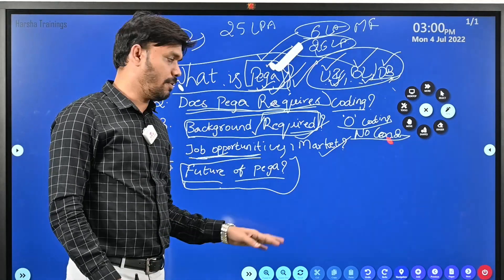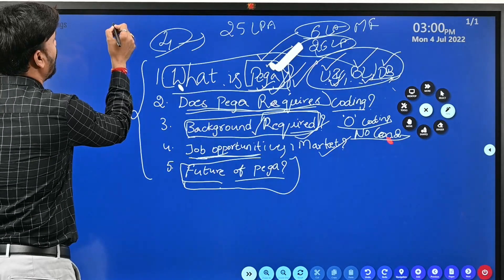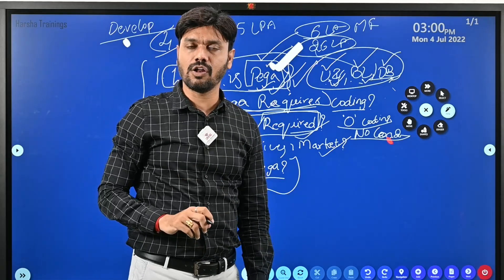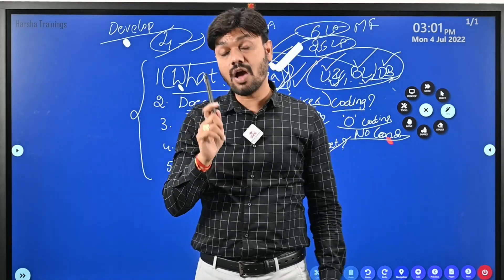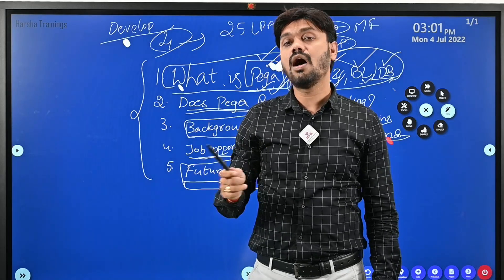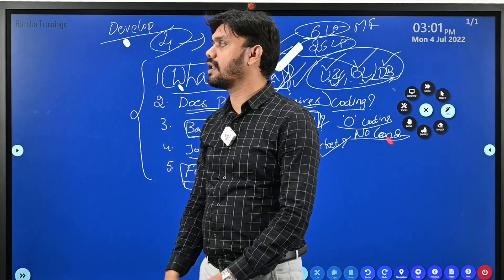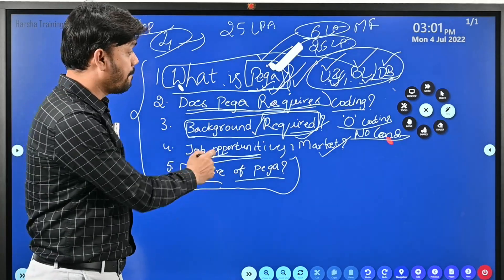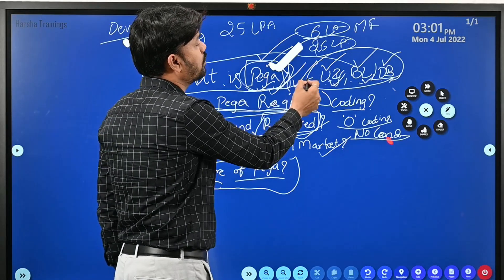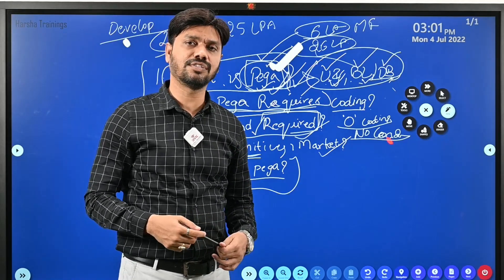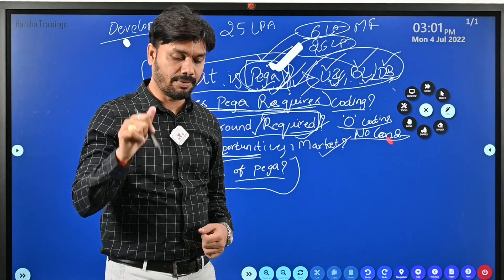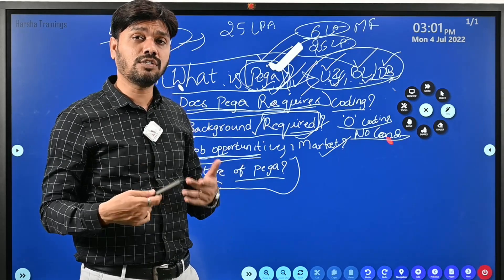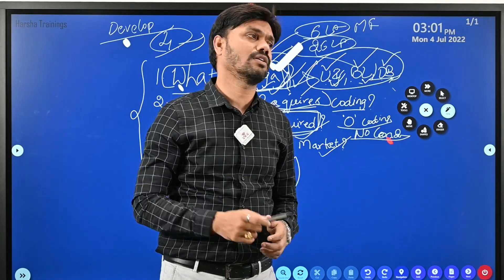You need to understand one important thing: PEGA is an application development tool. As long as Java, Python, and other UI technologies are used for application development, PEGA will also be there in the market — because PEGA is not a specific niche solution, it is meant for application development without coding. If a Java project takes three years, the same application can be developed in PEGA within one year or even six months.